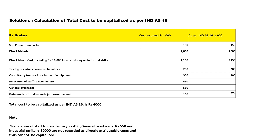Construction of a new building — as per Indian Accounting Standard 16, site preparation cost is included, so we will write 150. Direct material — yes, 2,000, so we will take it as 2,000. Then we have direct labor cost, which includes Rs. 10,000 incurred during an industrial strike.